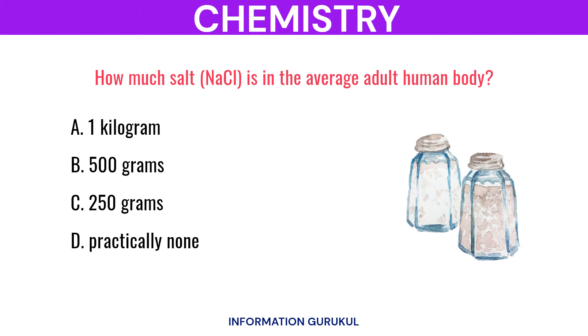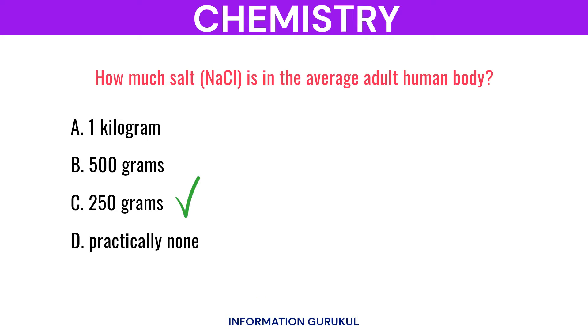How much salt is in the average adult human body? 250 grams.